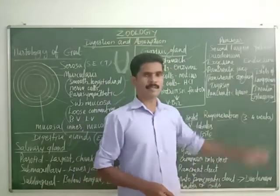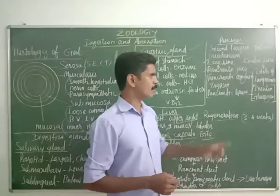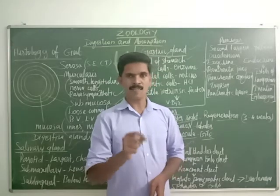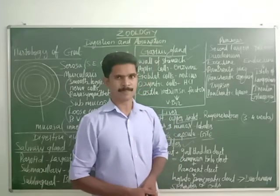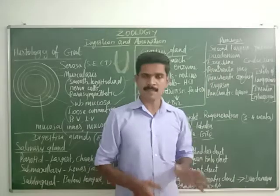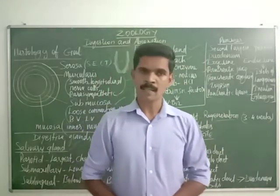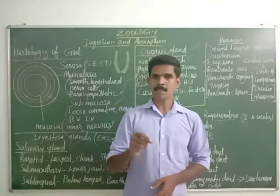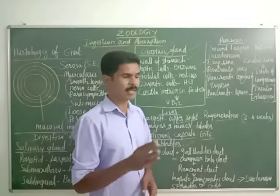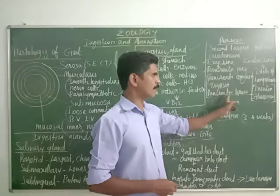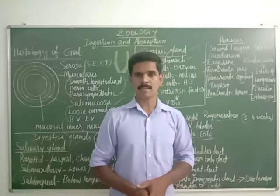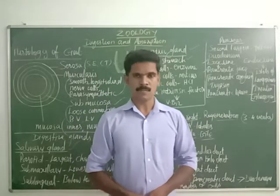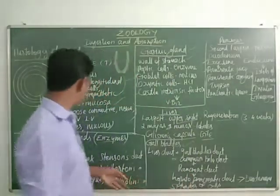The Islets of Langerhans are made up of two types of cells: alpha cells and beta cells. Alpha cells secrete glucagon and beta cells secrete insulin. To summarize the pancreas: it is the second largest yellow gland, located in the duodenum, acts as both exocrine and endocrine, with pancreatic amylase, trypsin, and pancreatic lipase as its enzymes.